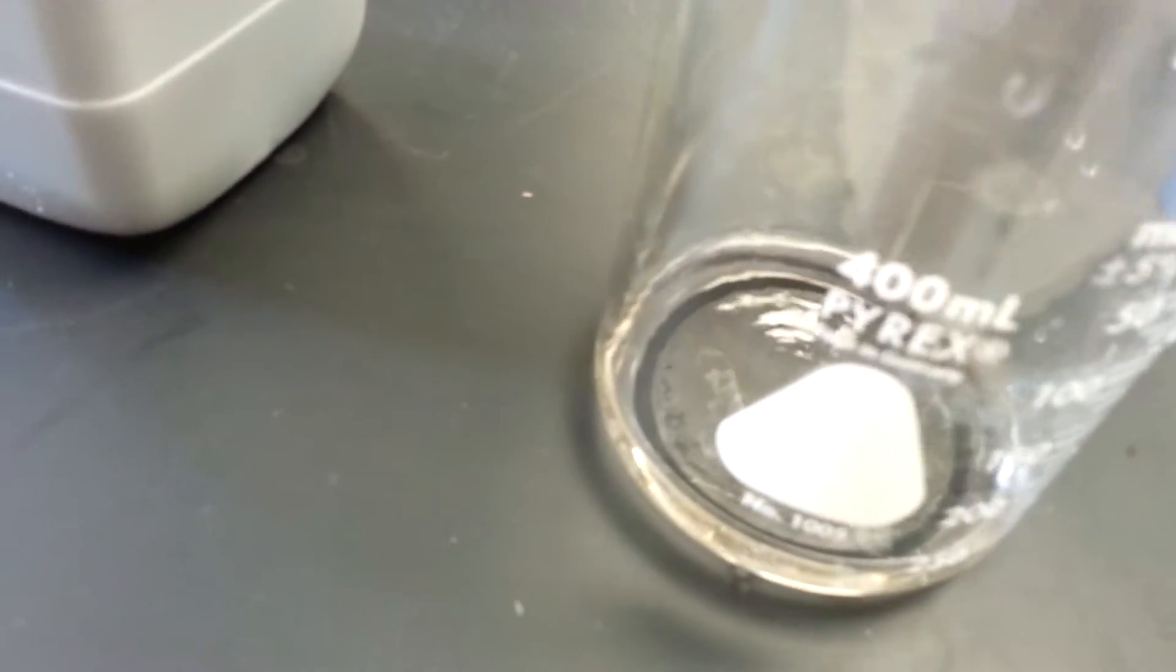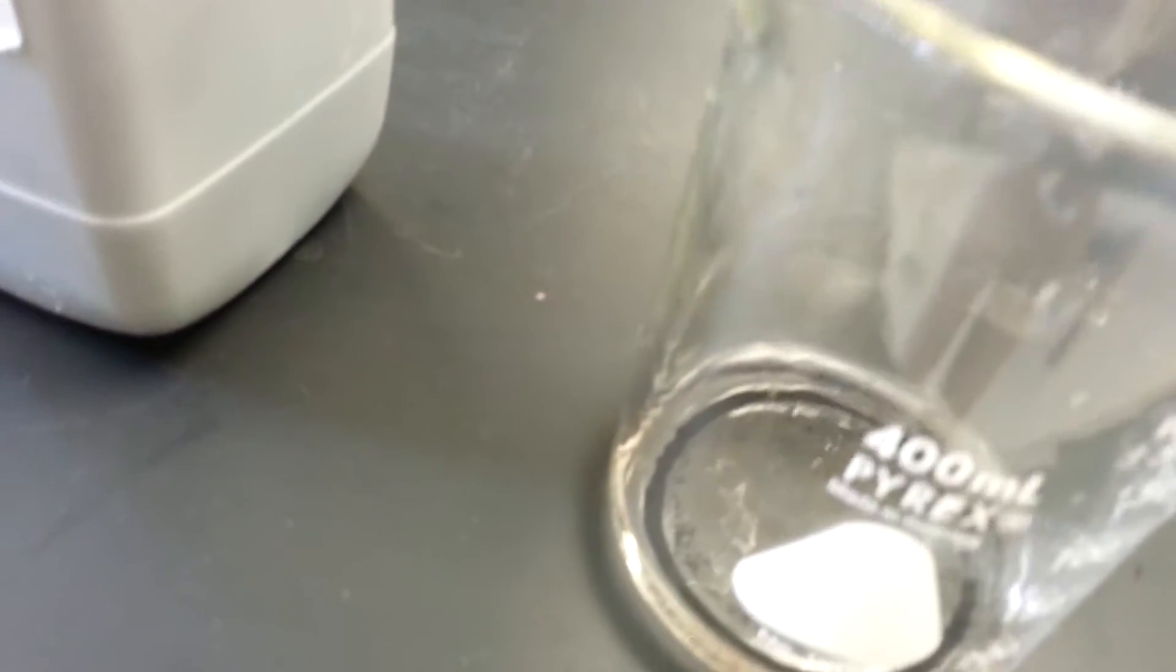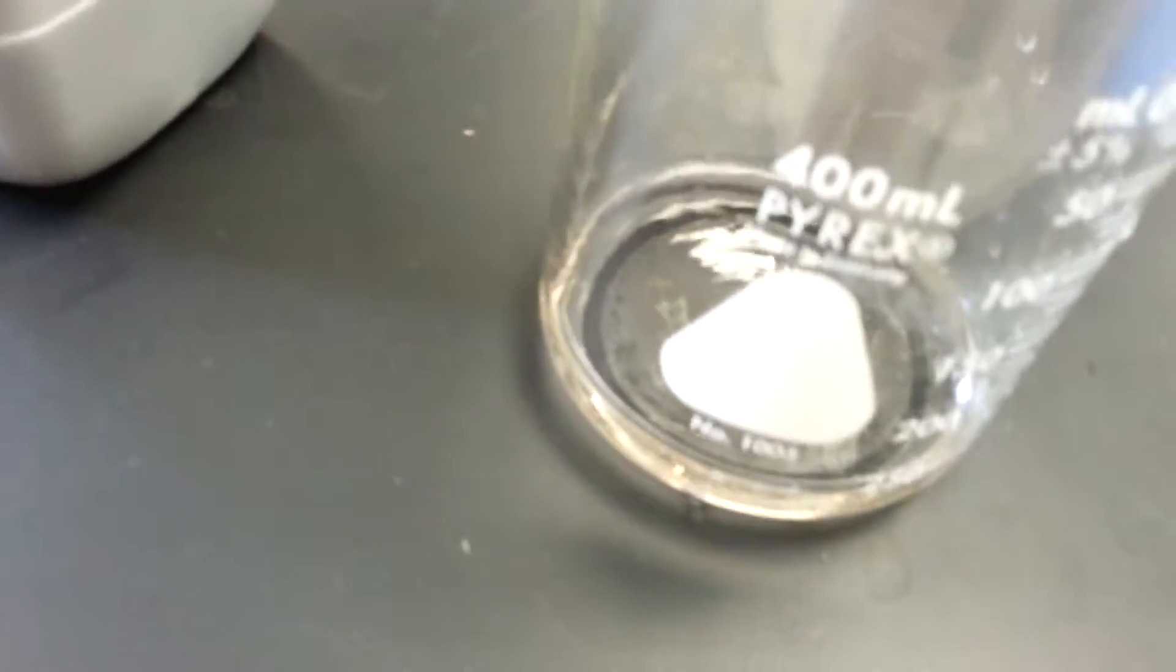The reason why you have to neutralize your acids and bases is that you cannot pour them down the drain. As long as it's neutralized, most of them you can. Let's see what happens when you add sodium bicarbonate to sulfuric acid.